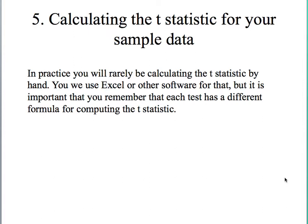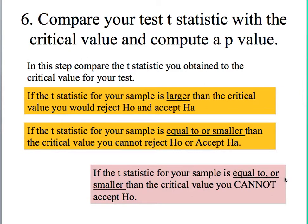It's important to remember that each test has a different formula for computing the t-statistic. Once you've calculated your t-statistic and established your t-critical value, you compare the t-statistic you obtained to the critical value. If the t-statistic for your sample is larger than the critical value, you will reject the null hypothesis and accept the alternative hypothesis.